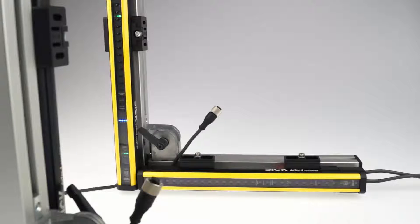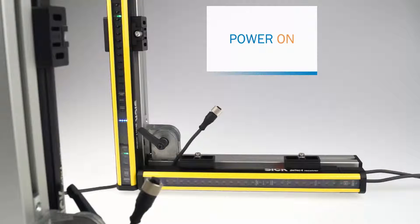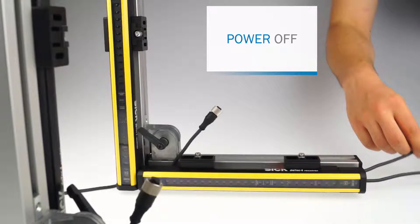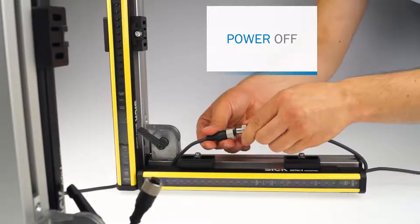To cascade another sender-receiver pair to an existing standalone system you need the system plug with extension connection on at least one sender and one receiver. Now after disconnecting the system from the power supply you simply connect the other devices to the extension connection from the system plug of the previous device in the cascade.